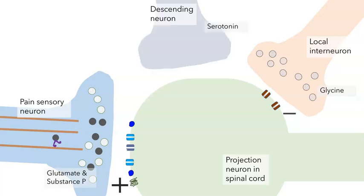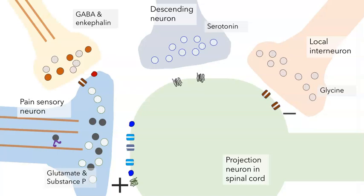There are also descending neurons whose cell bodies lie in the brainstem. Some of these release serotonin, which when it binds to its receptor can modulate activity in the projection neuron. There are other interneurons that can modulate the activity of the presynaptic cell — for example, neurons that release GABA and enkephalin that keep them from exciting the projection neurons. In addition, cells can produce endocannabinoids and gaseous neurotransmitters. So the activity in the projection neuron depends on the balance of all of these different inputs and all of these different neurotransmitters.